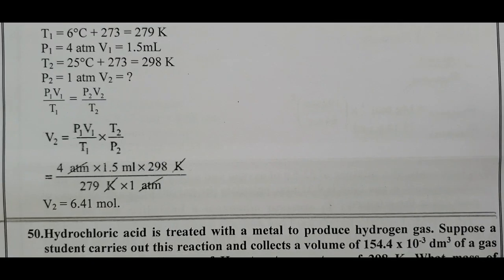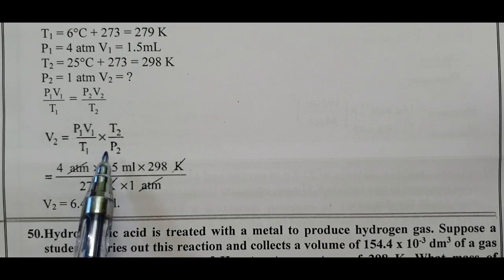Substituting the values: P1 value is 4 atmospheric pressure, V1 is 1.5 mL, T2 is 298 Kelvin, T1 is 279 Kelvin, P2 equals 1 atm.